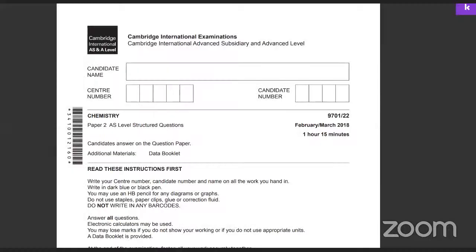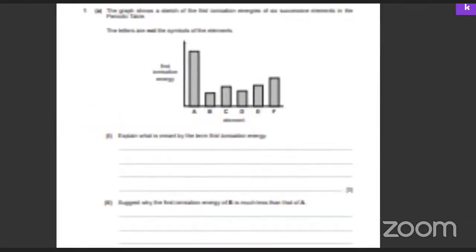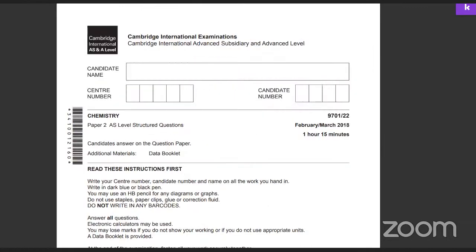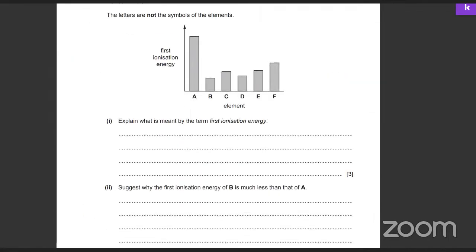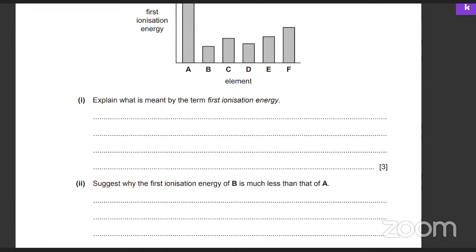Let's start with this paper, starting with the first thing. Tell me what's the definition of the first ionization energy. It is the energy required to remove one mole of electrons from one mole of gaseous atoms to form one mole of gaseous +1 ions.